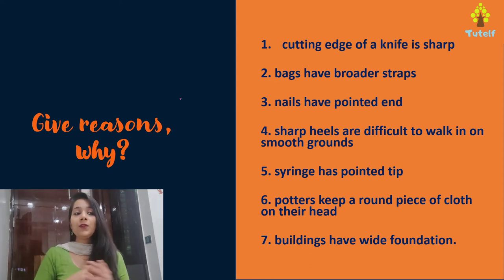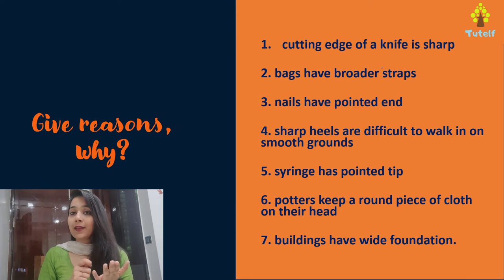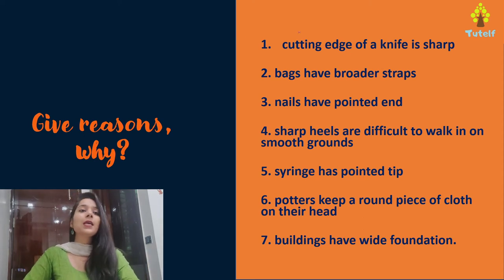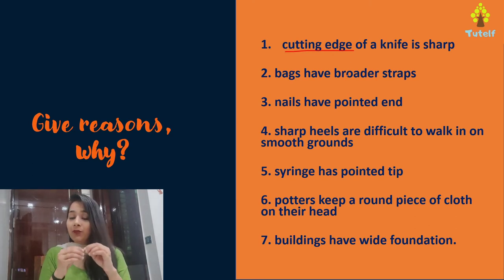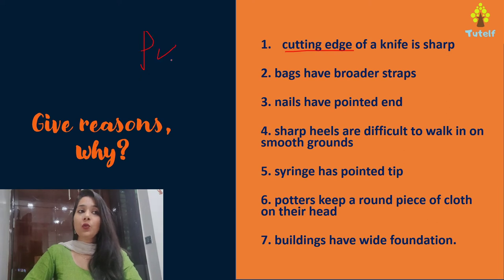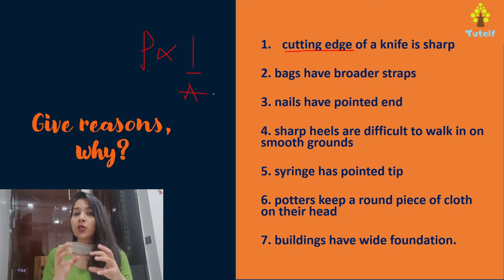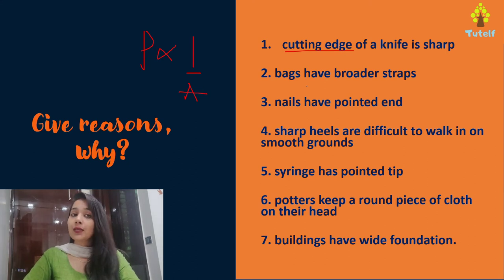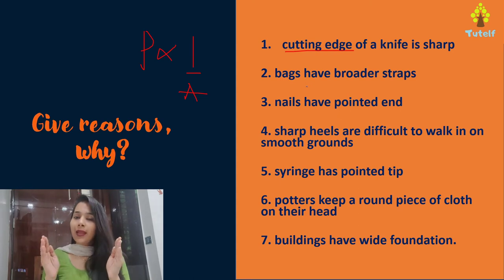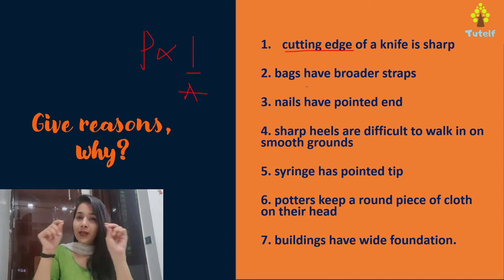There are various real-world applications. First, the cutting edge of a knife is sharp because a sharp edge has lesser area — since pressure is inversely proportional to area, less area means more pressure, making it easier to cut objects. Second, bags have broader straps because a broader strap gives greater area, and more area means less pressure on your shoulders.